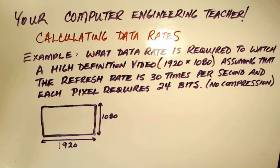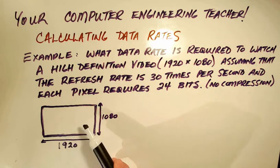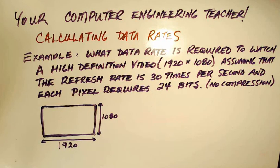So the total number of pixels on one screen when it's drawn is this number multiplied by this number here. That's the total number of pixels on the screen. When the image is drawn once, it's going to take that many pixels to do it.